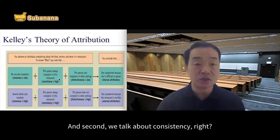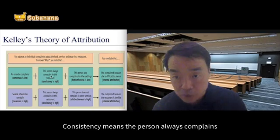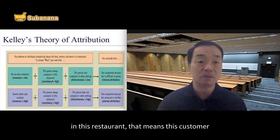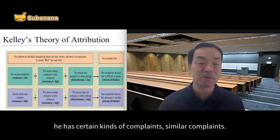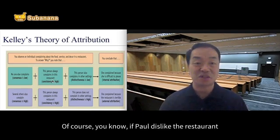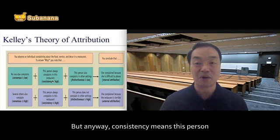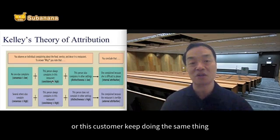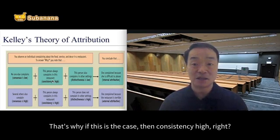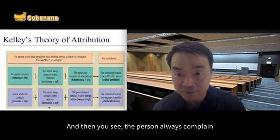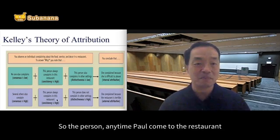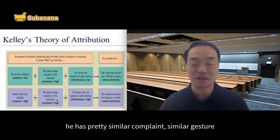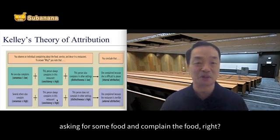Second, we talk about consistency. Consistency means the person always complains in this restaurant. For instance, every time this customer — let's call him Paul — comes to the restaurant, he has similar kinds of complaints. Consistency means this customer keeps doing the same thing, which is complaining. If that is the case, then consistency is high. So anytime Paul comes to the restaurant, he has pretty similar complaints and similar behavior — ordering food and then complaining about it.